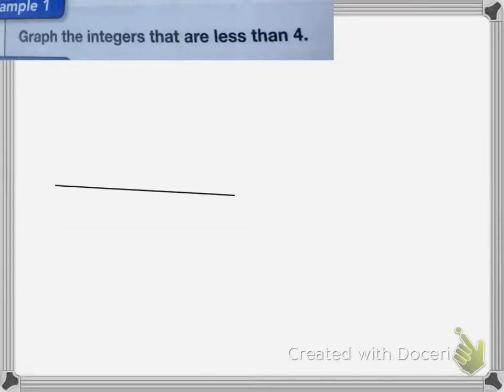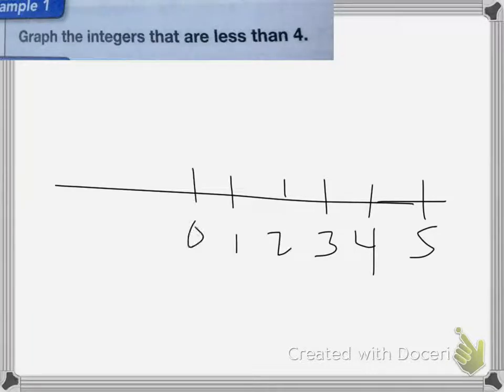If I draw my graph and start with 4 up here, then 5, and we could keep going. Now I'm going to mark the integers that are less than 4. I'll use a color and put a dot on all of the integers that are less than 4.